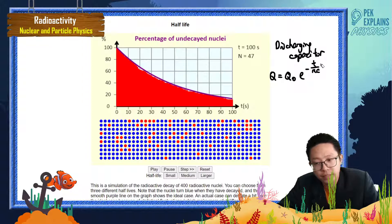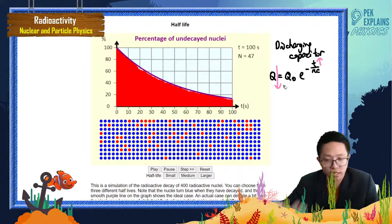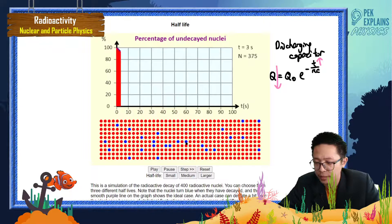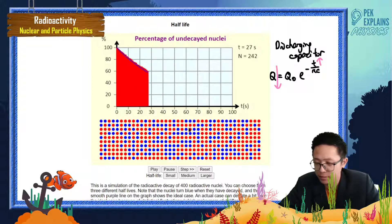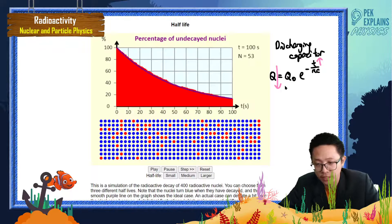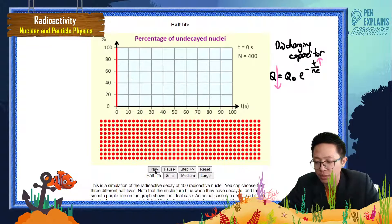Last time we learned about the discharging capacitor. As time goes by, as time increases, the charge decreases — the discharging capacitor is a decreasing exponential graph. We can also use this for radioactive decay, because in radioactive decay, initially there are a lot of unstable nuclei, but as time goes by, the unstable nuclei become less and less. The stable nuclei become more and more.